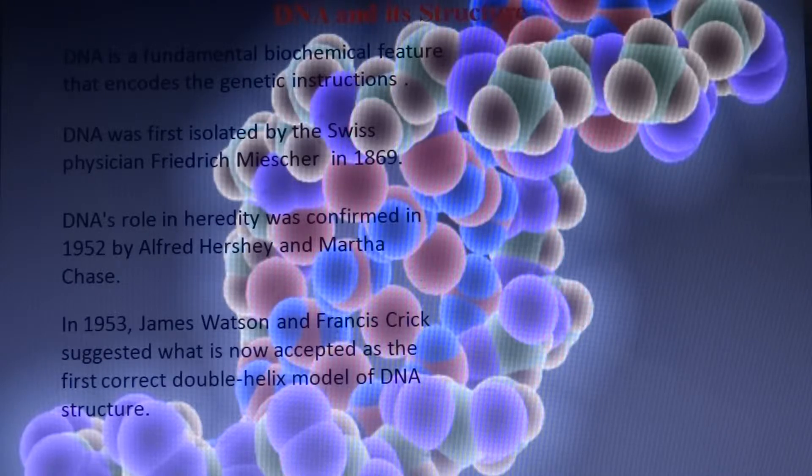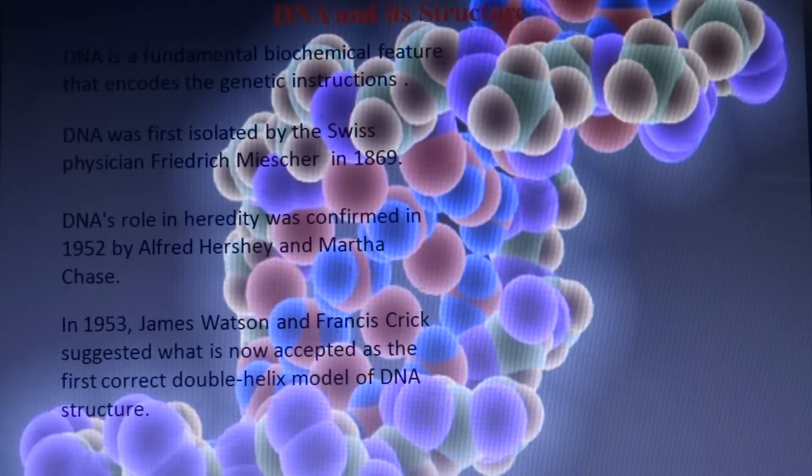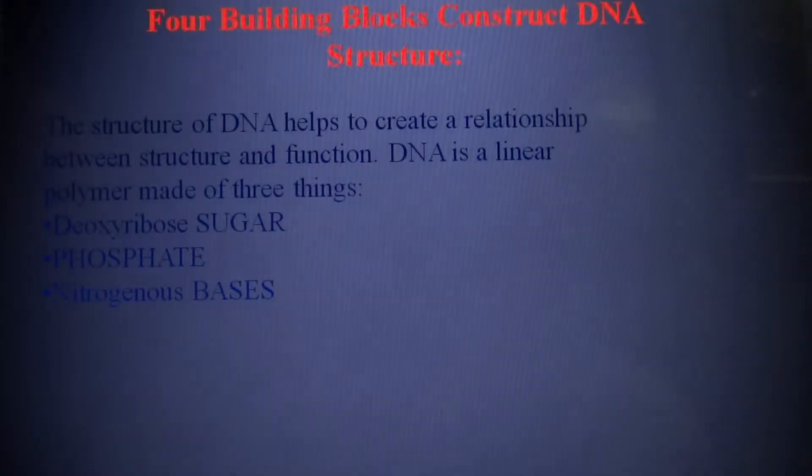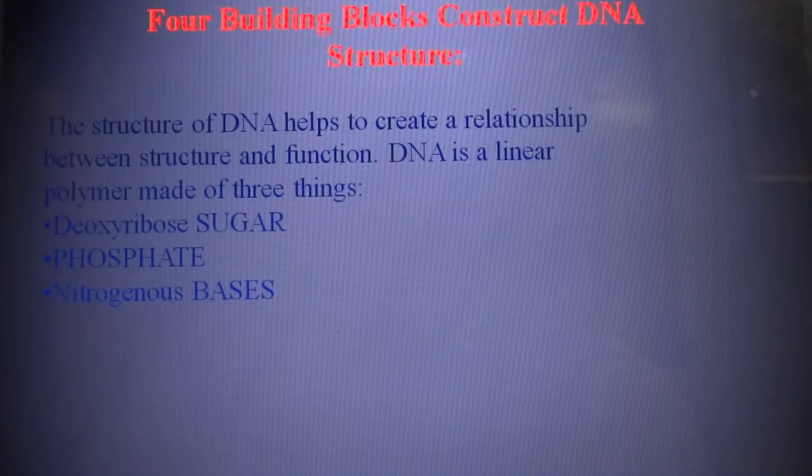In 1953, James Watson and Francis Crick suggested what is now accepted as the first correct double helix model of DNA structure.